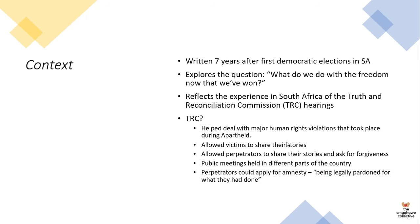The Truth and Reconciliation Commission was also a platform for perpetrators to apply for amnesty. Amnesty means that you are legally pardoned for what you have done. If you were in the wrong, you are applying for amnesty. The TRC basically gave people the opportunity to do so.